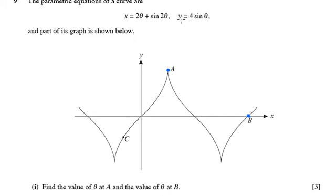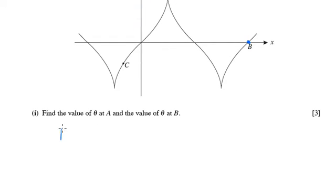So if you look at y, this is when y is at its maximum. And when will y be at its maximum? y will be at its maximum when sine theta is at its maximum. And the maximum value of sine theta here is 90 or pi over 2. So at A, theta must be equal to pi over 2.